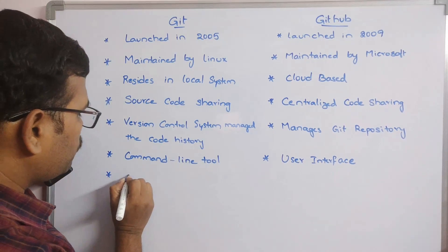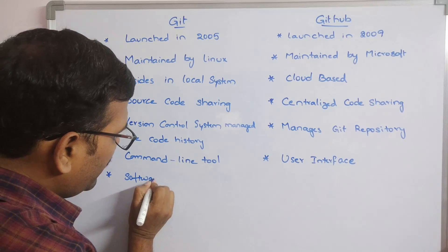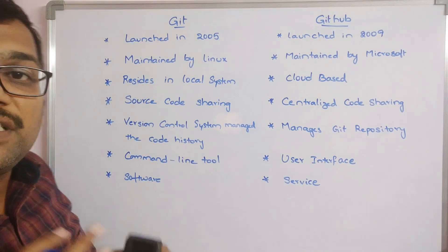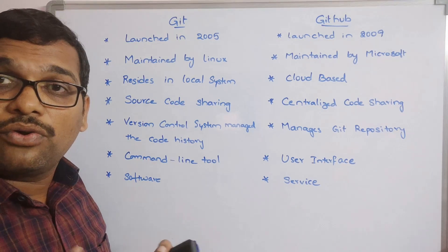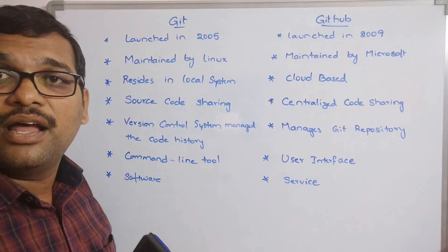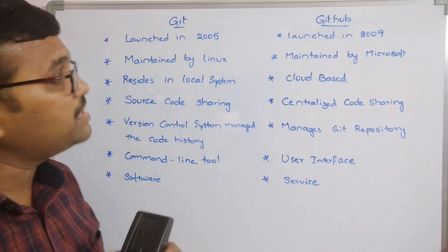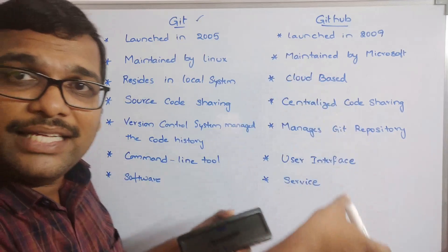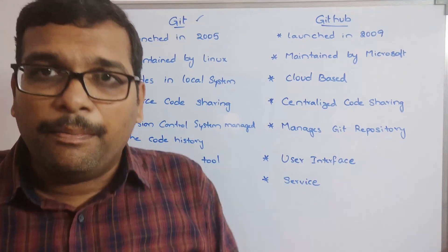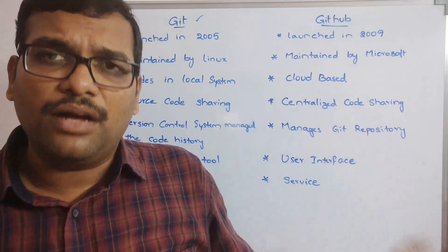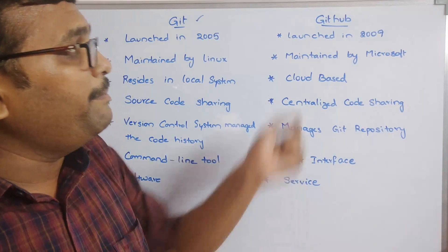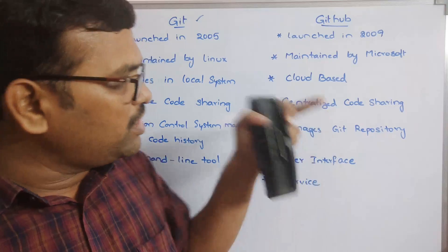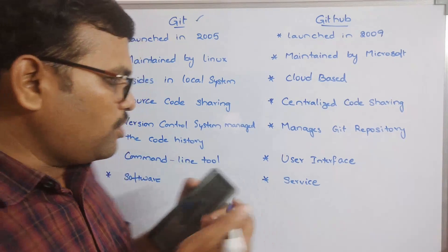Git is a software whereas GitHub is a service. Whatever source code we are writing is available on the local system and maintained in repositories with the help of Git. GitHub makes the complete source code centralized — available to the public — and it is cloud-based, so it is a web hosting service.